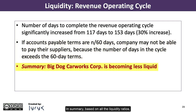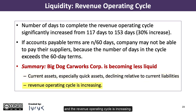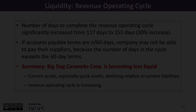In summary, based on all the liquidity ratios, it appears that Big Dog Car Works Corporation is becoming less liquid. Current assets, especially quick assets, are declining relative to current liabilities, and the revenue operating cycle is increasing.